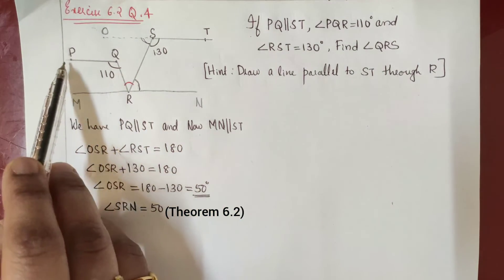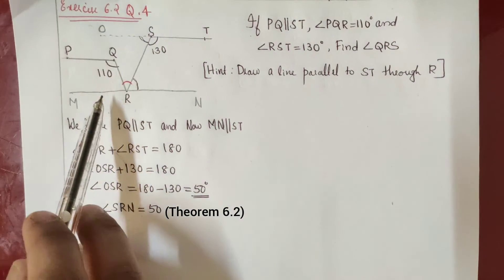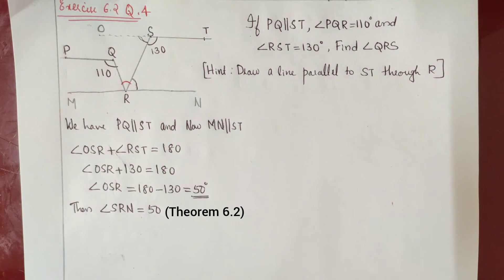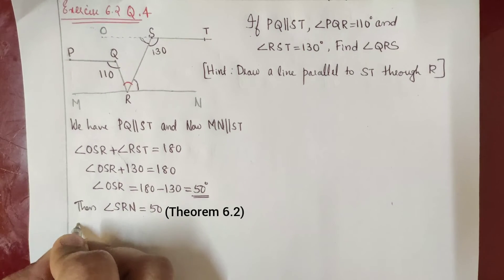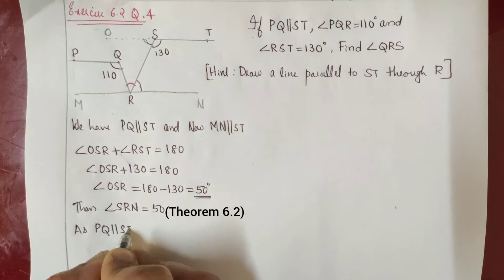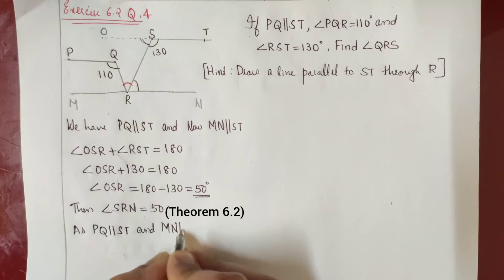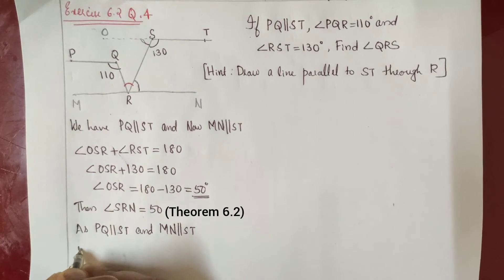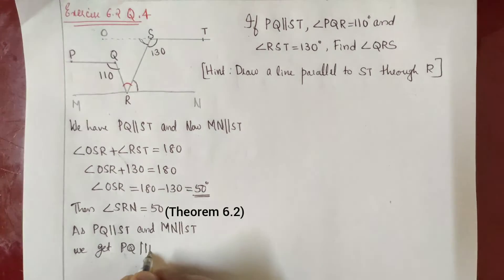Next, PQ is parallel to ST and MN is parallel to ST, so these two lines are parallel to the same line ST. If two lines are parallel to the same line then they are parallel to each other — by Theorem 6.6. So we get PQ parallel to MN.